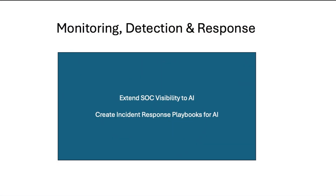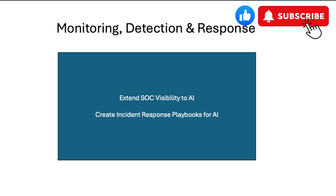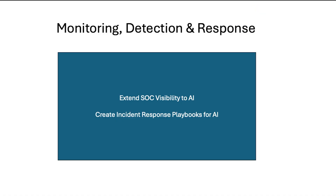The last area is monitoring, detection, and response. We have to extend the SOC — the Security Operations Center — into the generative AI applications. We need telemetry for prompts, context documents, and how models are configured. We need to start looking for anomalies like rapid spikes in token use, monitoring these systems to know what's going on. If an incident occurs, we're going to need incident response playbooks so we know exactly what to do when an AI-related incident takes place.